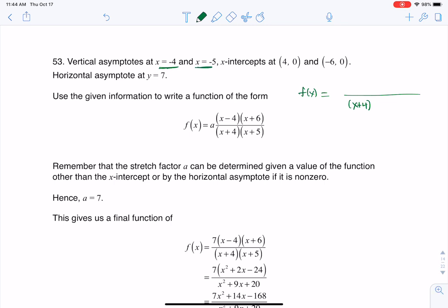And then we had x equaling negative 5 was another vertical asymptote, so again I must have a factor of x plus 5, and it's got to be just in the denominator.